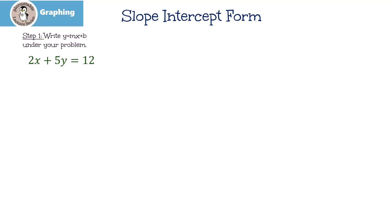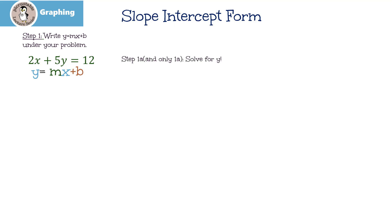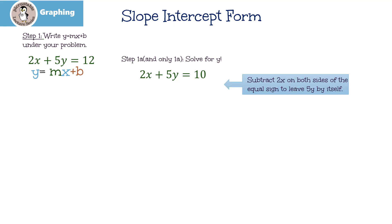Here's our next one. The first thing I like to do is to write y equals mx plus b underneath our equation. But you're going to notice a problem: the equation isn't solved for y — it doesn't look like y equals mx plus b. So this is step 1a: the only thing we're going to do is solve for y. We're going to use algebra. We're going to subtract 2x on both sides of the equation because I want to leave 5y by itself. Hopefully you noticed that I didn't put negative 2x under the 10 — the reason is they're not like terms.